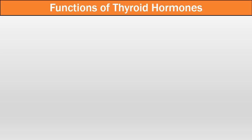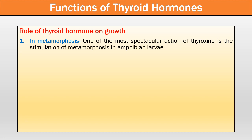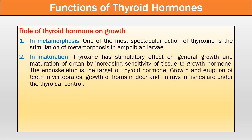Now let us come to the functions of the thyroid hormone. Thyroid hormone has numerous roles in our body. In case of growth and development, one of the most spectacular actions of thyroxine is the stimulation of metamorphosis in amphibian larvae. Thyroxine has a stimulatory effect on general growth and maturation of organs by increasing the sensitivity of tissue to growth hormone. The endoskeleton is a target of thyroid hormone. Growth and eruption of teeth in vertebrates, growth of horns in deer, and fin rays in fishes are under thyroid control.